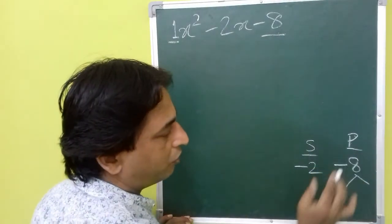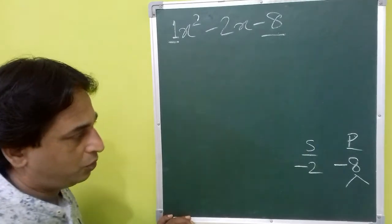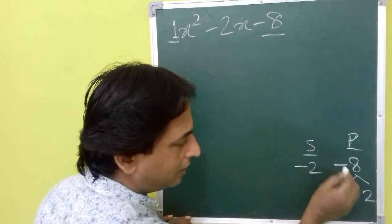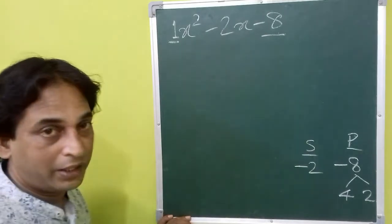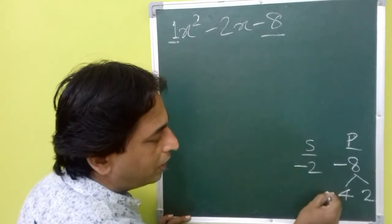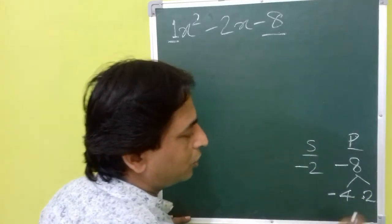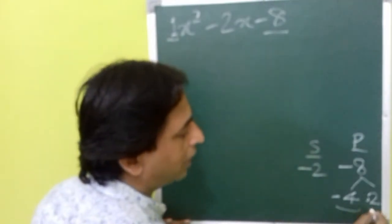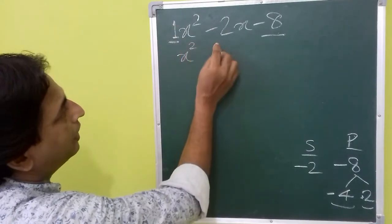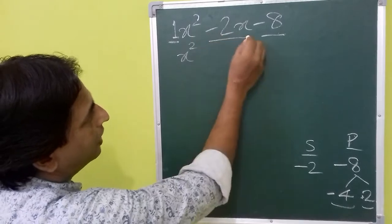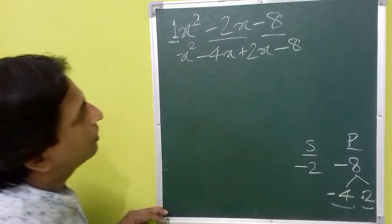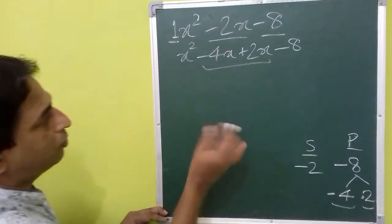So how can you find two factors of 8 so that the sum equals minus 2? You can see that 4 times 2 is 8, and to get minus 8 one of them should be negative. As we need negative 2 as the sum, the bigger number should be negative and the smaller positive. So we take minus 4 and plus 2, and instead of minus 2x we write minus 4x plus 2x minus 8.